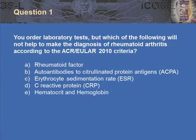The first question: you've ordered laboratory tests, but which of the following will not help to make the diagnosis of rheumatoid arthritis according to the ACR-EULAR 2010 criteria? A, rheumatoid factor; B, autoantibodies to citrullinated protein antigens, or ACPAs; C, erythrocyte sedimentation rate, or ESR; D, C-reactive protein, or CRP; or E, hematocrit and hemoglobin.